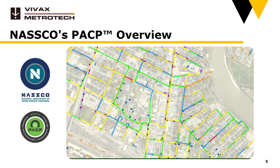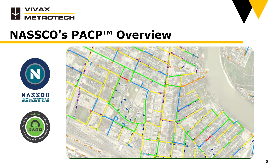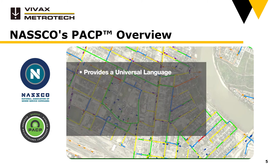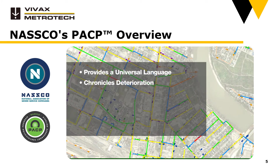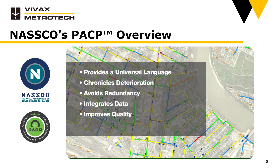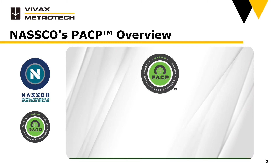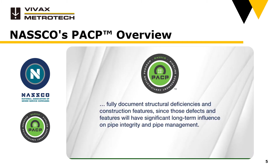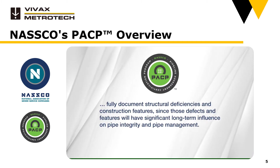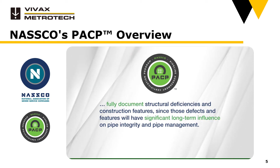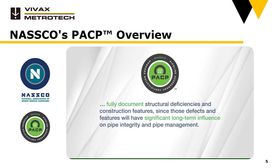PACP adds value because it allows benchmarking. In addition, it provides a universal language for assessment, provides ability to chronicle deterioration, avoids redundant effort, integrates data from various software products which allows flexibility to add custom fields, improves quality and consistency of observations, and it advances professionalism. The primary objective of PACP is to fully document structural deficiencies and construction features, since those defects and features will have the most significant long-term influence on pipe integrity and pipe management.